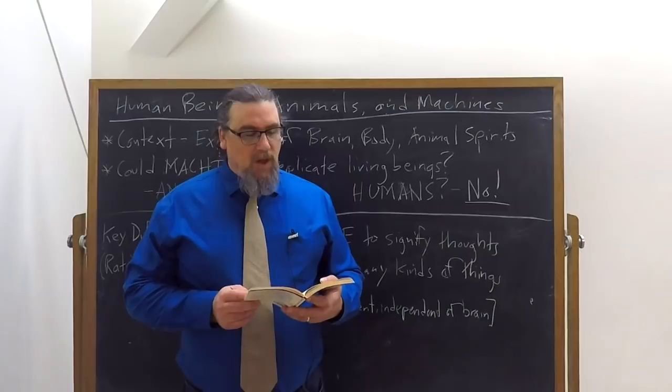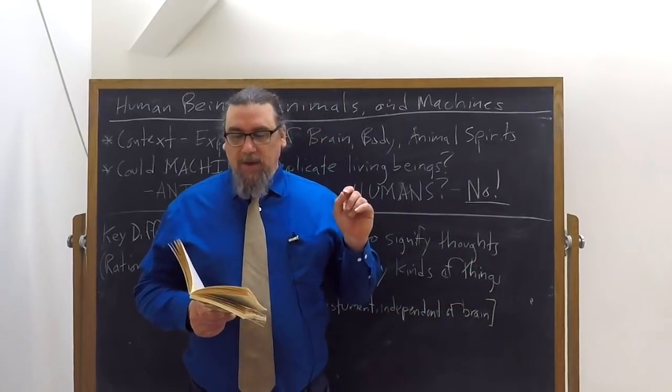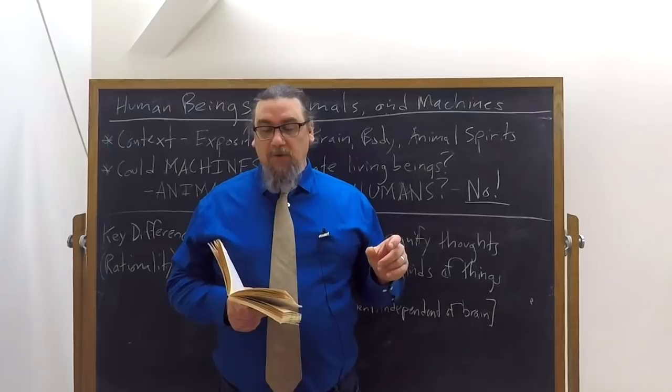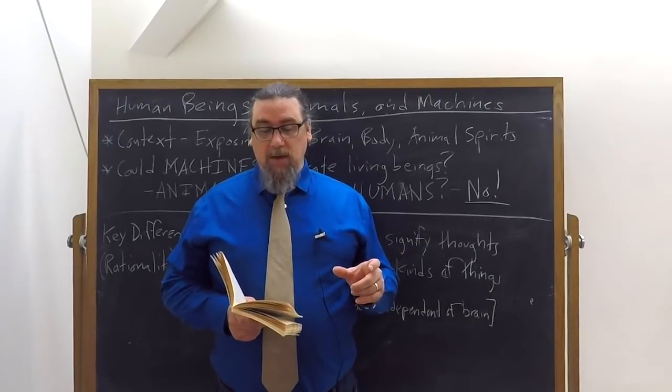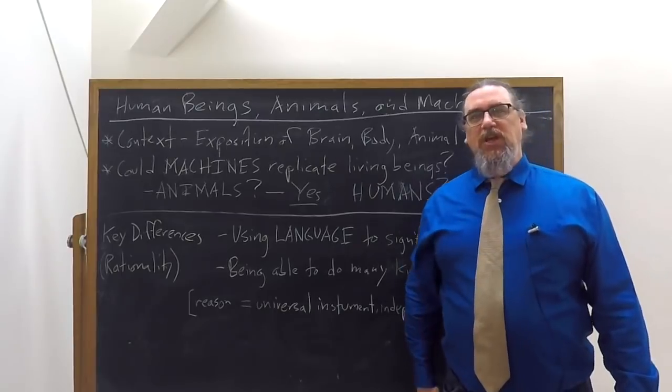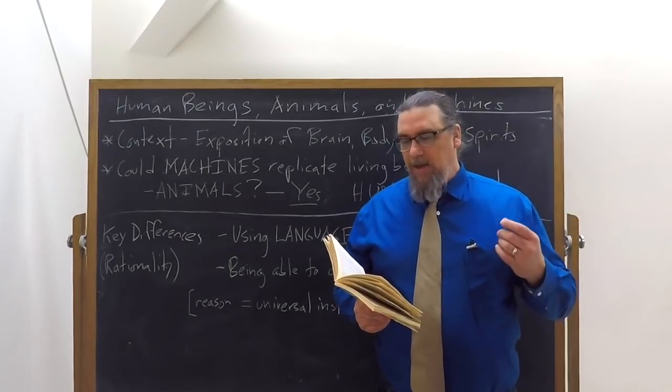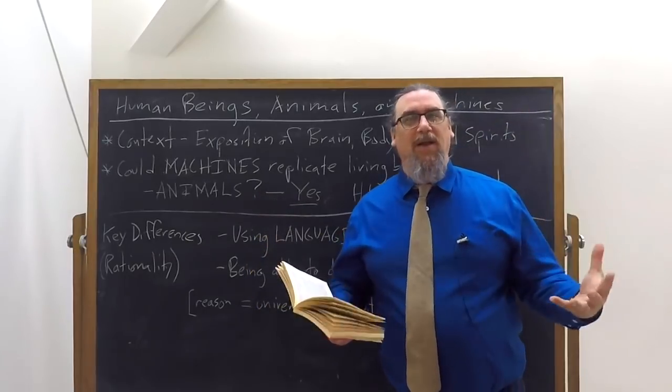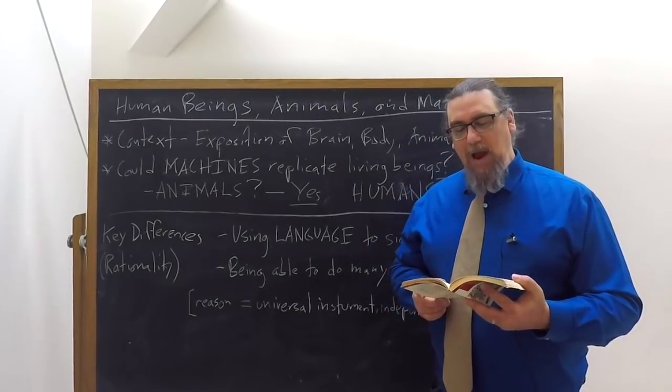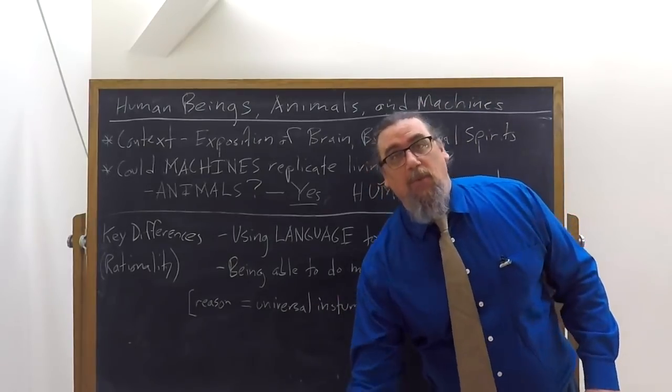All of this is not going to appear at all strange to a certain kind of people, people who are well-informed, well-informed about what? He says, those who know how wide a range of different automata, that is, self-moving mechanisms or moving machines, the skill of a human being can make using only a very few parts. If we compare that now to this complex machine that is the body, Descartes says, and we think about the infinite maker of it, in this case God, then you're going to understand this is an incredibly complex machine.